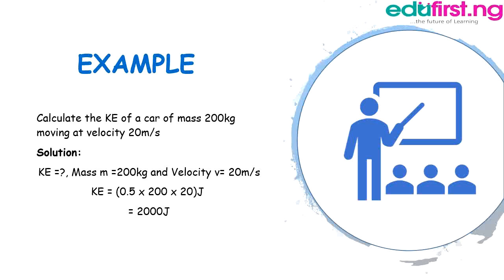Example: Calculate the kinetic energy of a car of mass 200 kilograms moving at a velocity of 20 meters per second. Solution: KE is what we are asked to calculate. Mass equals 200 kilograms, velocity equals 20 meters per second. Therefore, KE equals half MV squared, which equals 0.5 times 200 times 20 squared, which equals 2000 Joules.